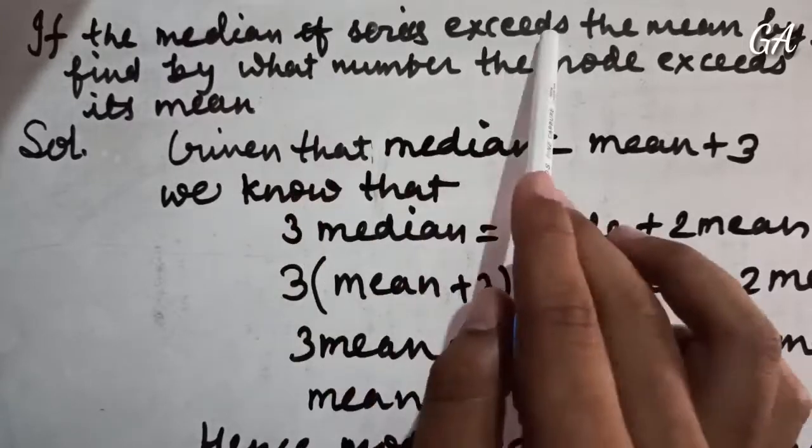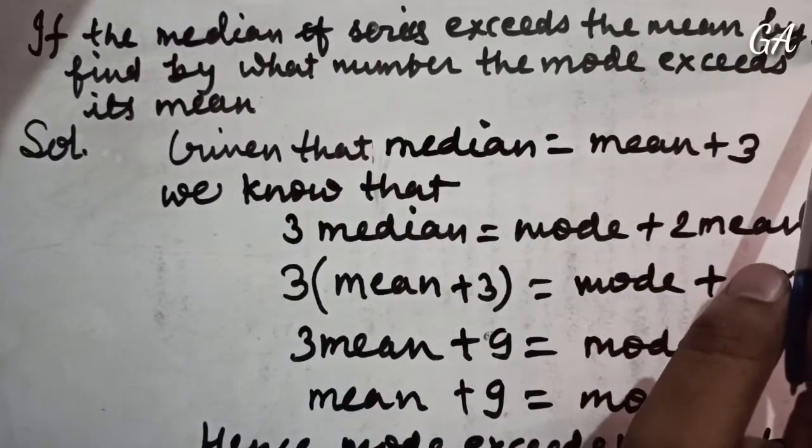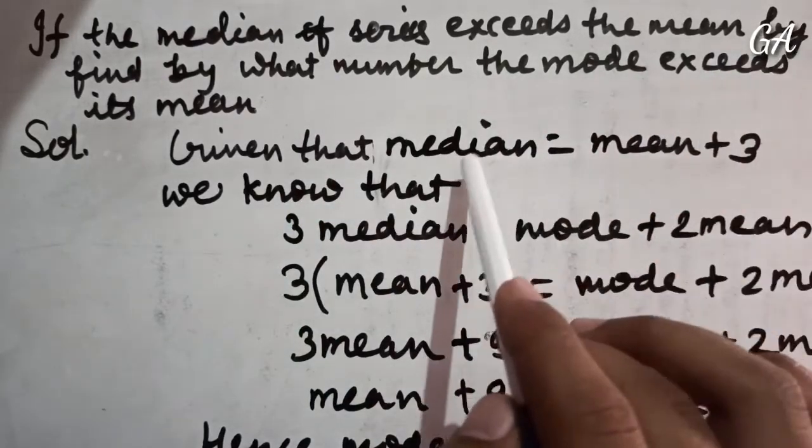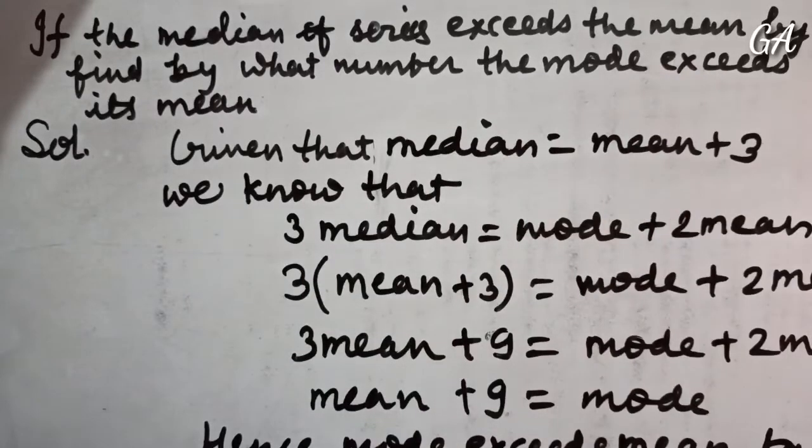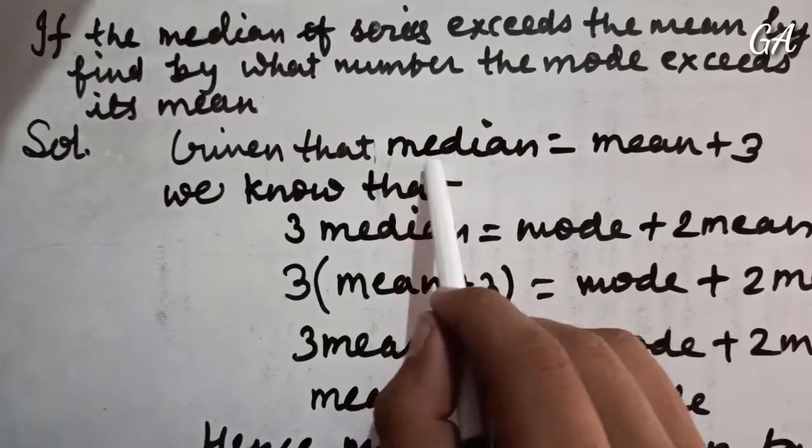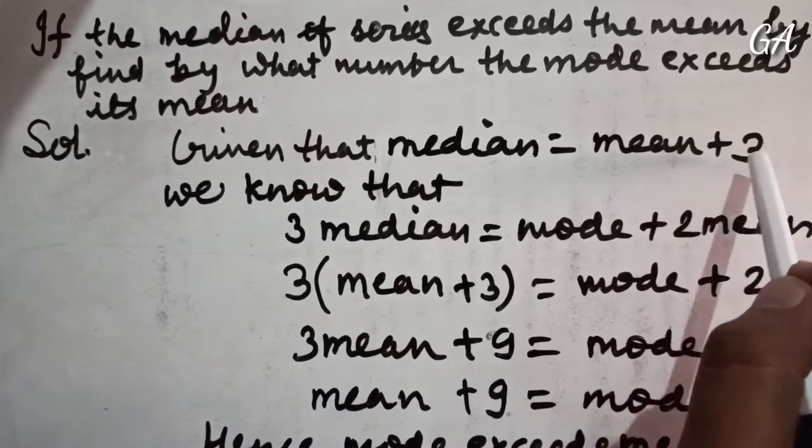What does it mean that the median exceeds the mean by 3? How can we write it? Median is equal to mean plus 3.